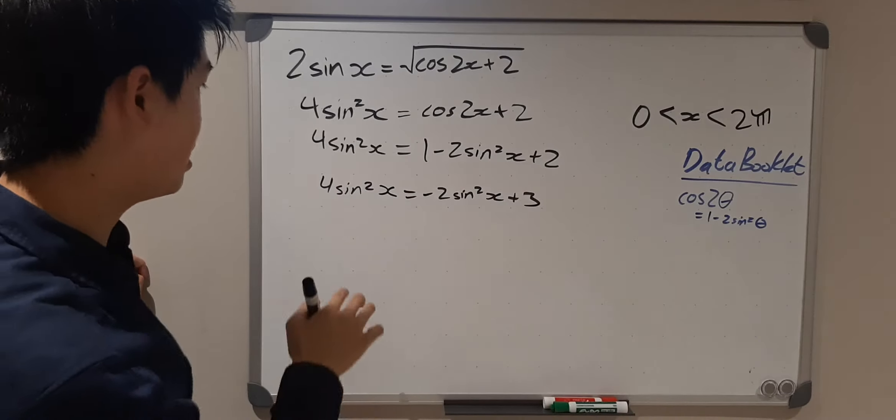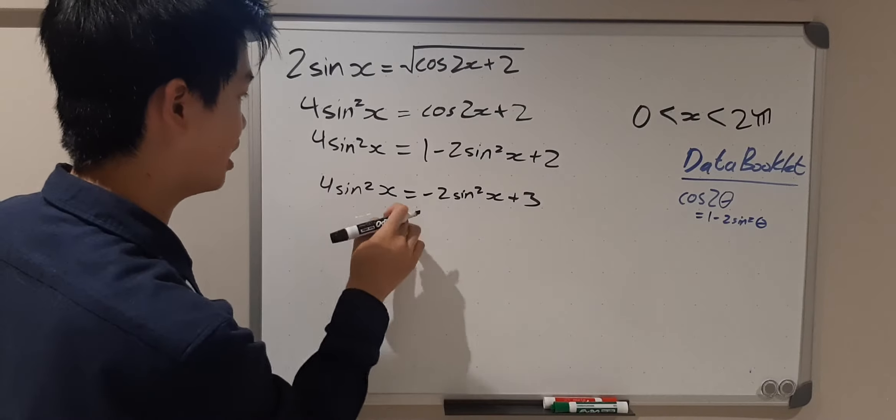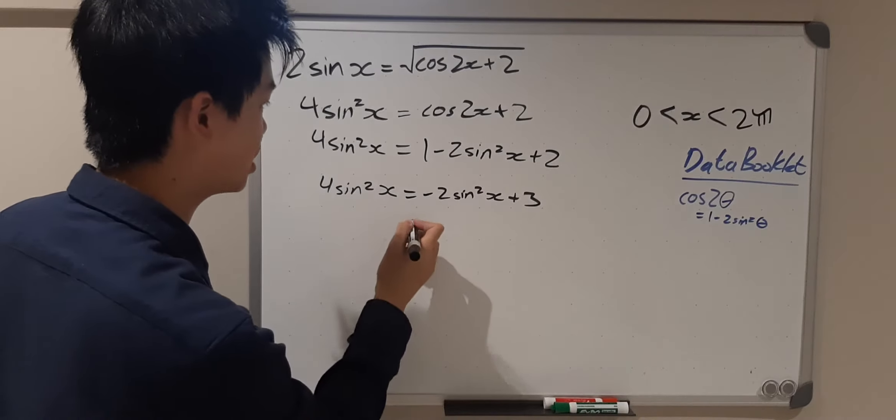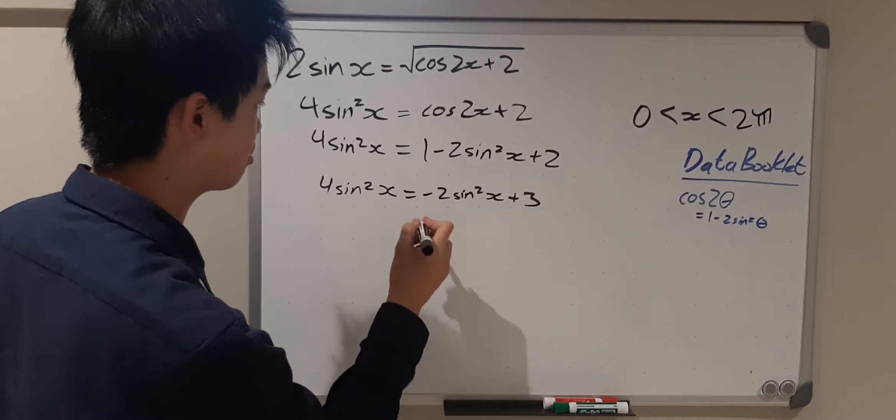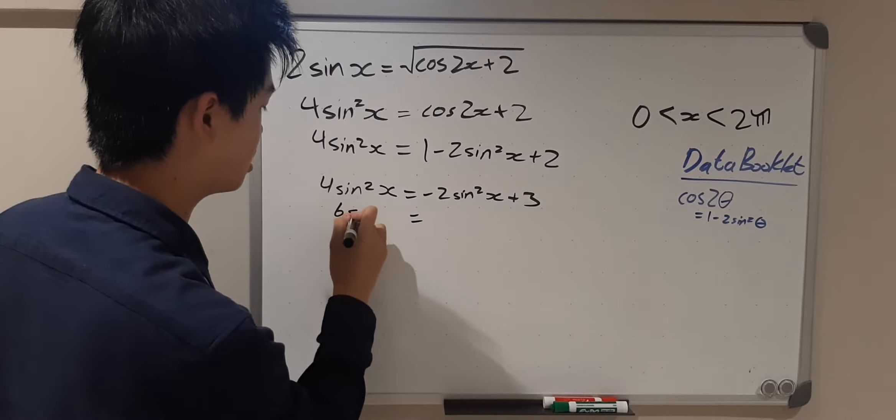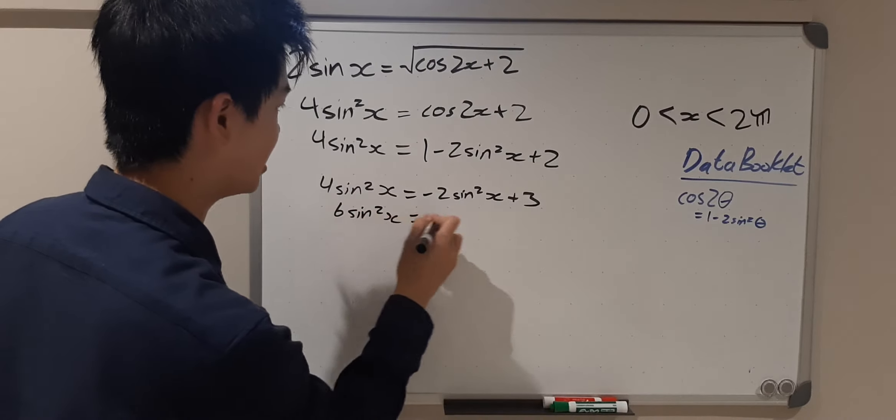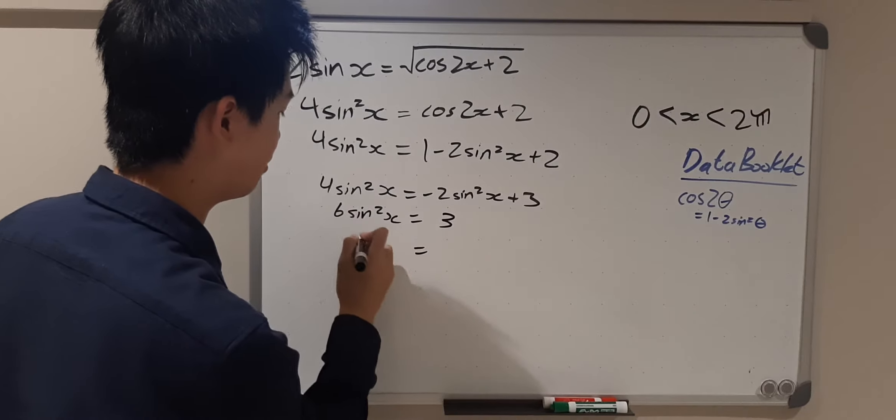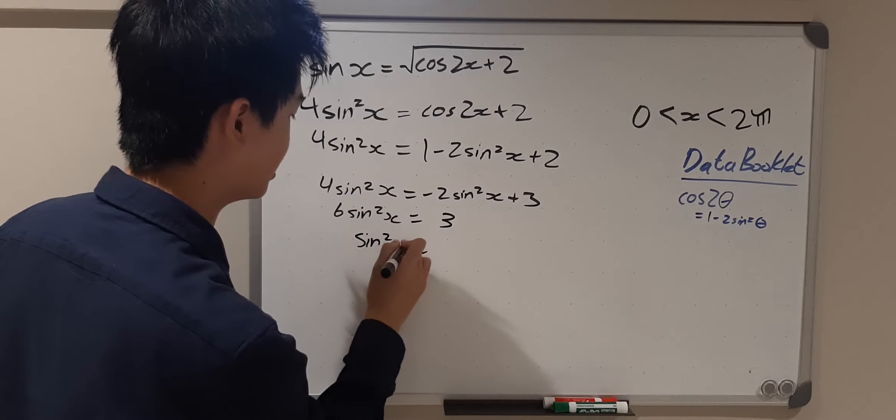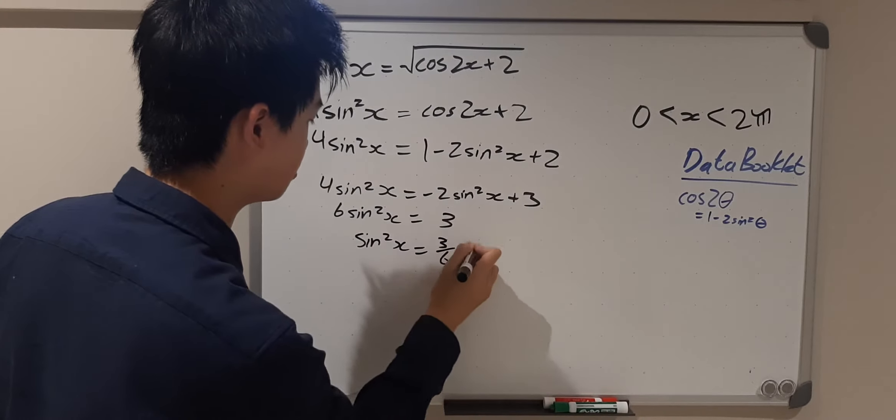Okay, now we have like terms, sin²(x) and sin²(x). We're going to add 2sin²(x) to both sides, so 6sin²(x) = 3. Now we divide by 6 on both sides, sin²(x) = 3/6, that's equal to 1/2.